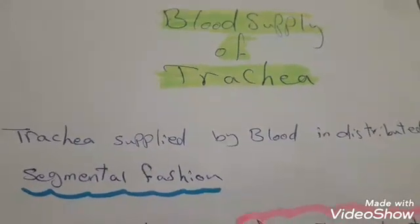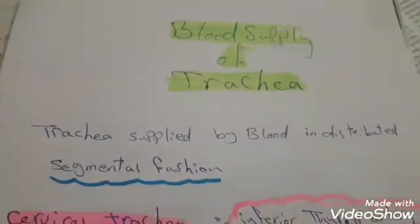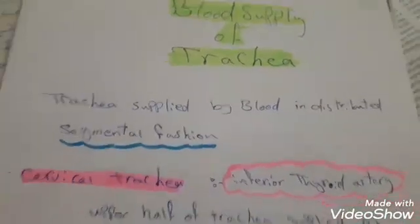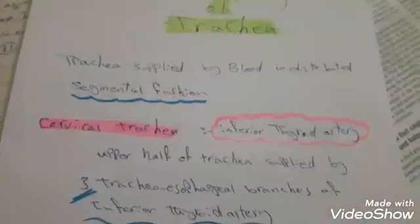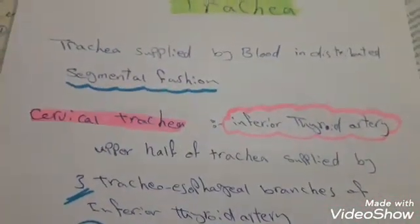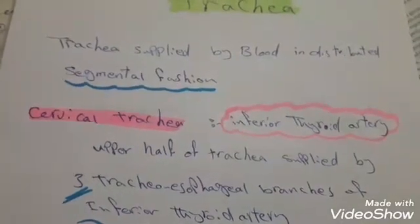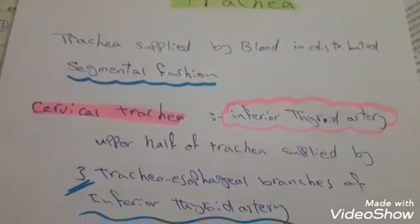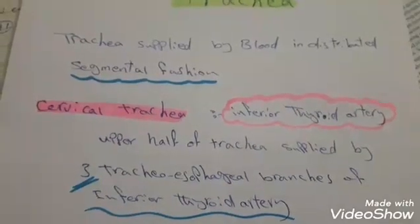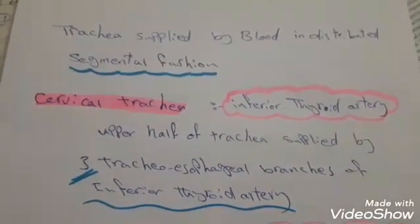The trachea is supplied by blood in a distributed segmental fashion. The cervical trachea receives blood supply from the inferior thyroid artery. The upper half of the trachea is supplied by three tracheoesophageal branches of the inferior thyroid artery.